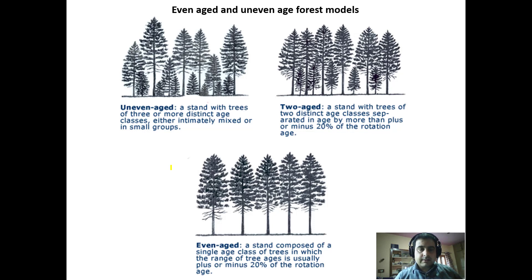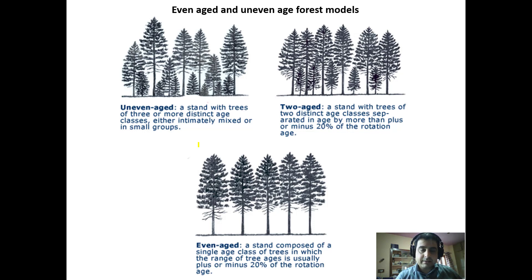Welcome back. We will discuss even-aged and uneven-aged forest models. Even-aged forests are regular forests where the crop is of uniform age and size, and uneven-aged forests are where the forest has a mixed range of ages. Now let's have a closer look at uneven-aged stands.